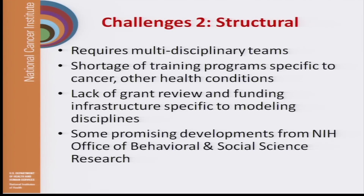There are a number of structural challenges as well. We talk about multidisciplinary teams — here I think there's a need to have the whole spectrum of individuals, going from basic scientists to clinical oncologists to health services researchers to system modelers. All of them need to be working on the same research teams to make the kinds of connections we've been talking about. There's a real shortage of training programs around the country specific to cancer or other health conditions. The home of simulation modeling tends to be in engineering schools, with very few applications — with some exceptions, such as work at the University of Michigan and at Harvard. But in general, there is a shortage, and it's difficult to find a place to get the kind of training needed to really advance this effort.